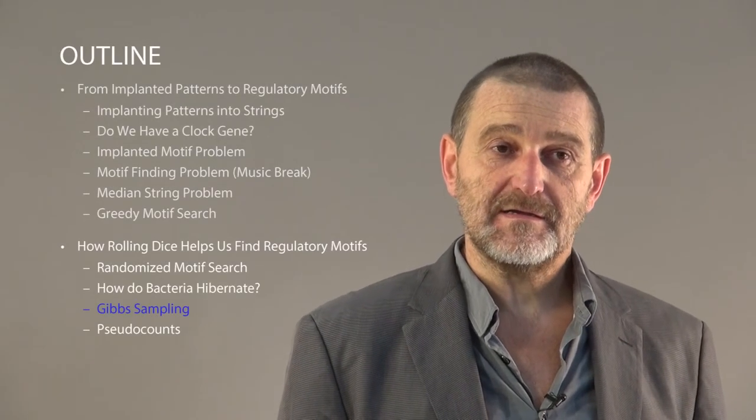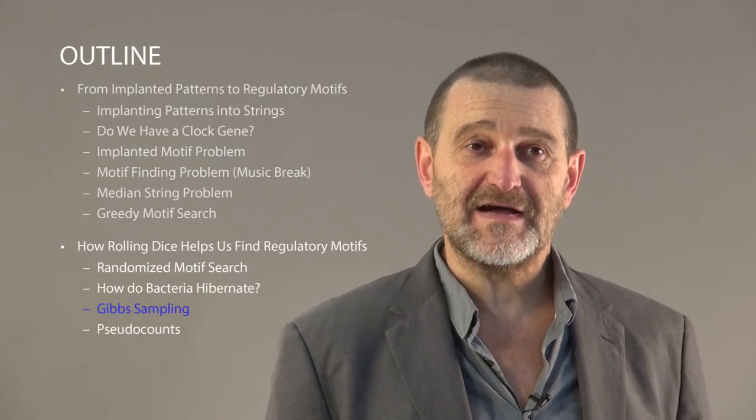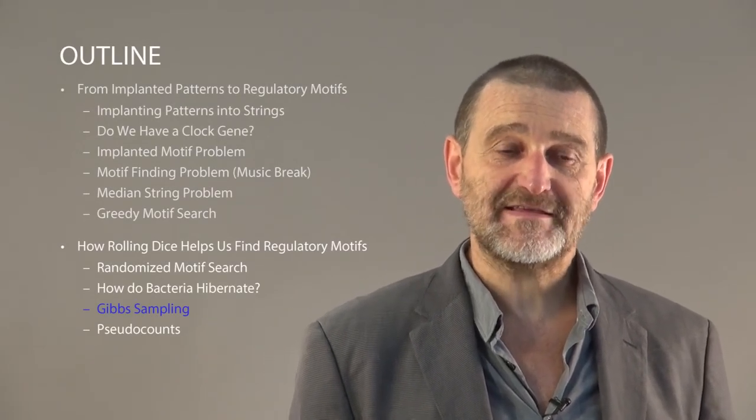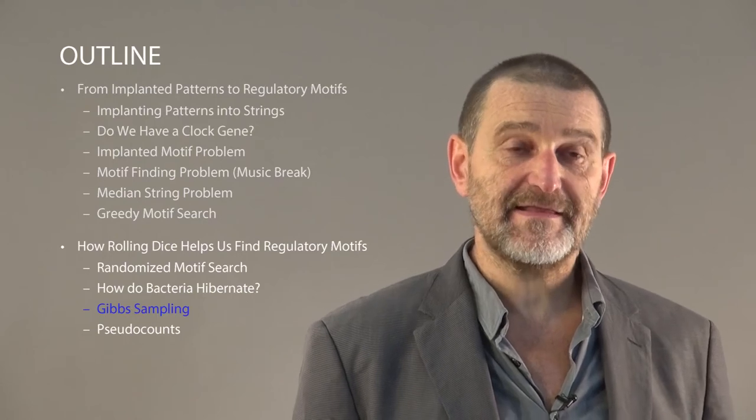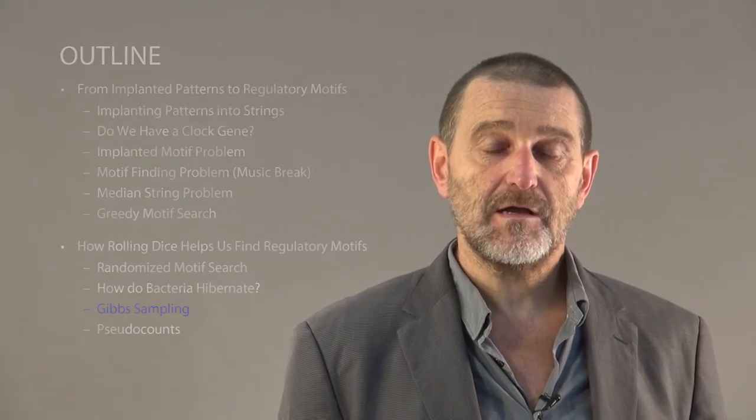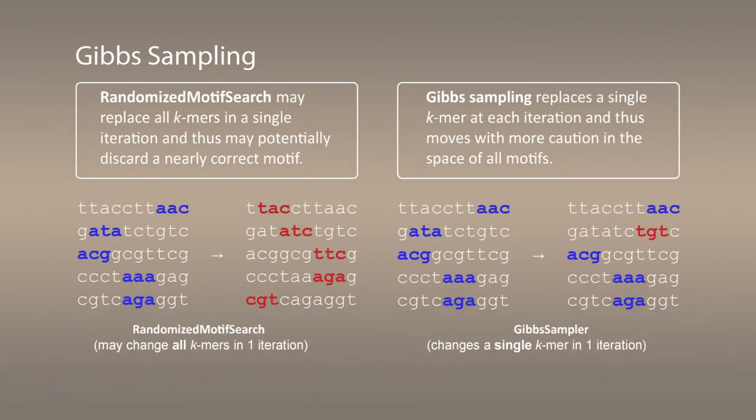I now introduce Gibbs sampling, another randomized algorithm for motif finding. Gibbs sampling works somewhat similarly to randomized motif search.